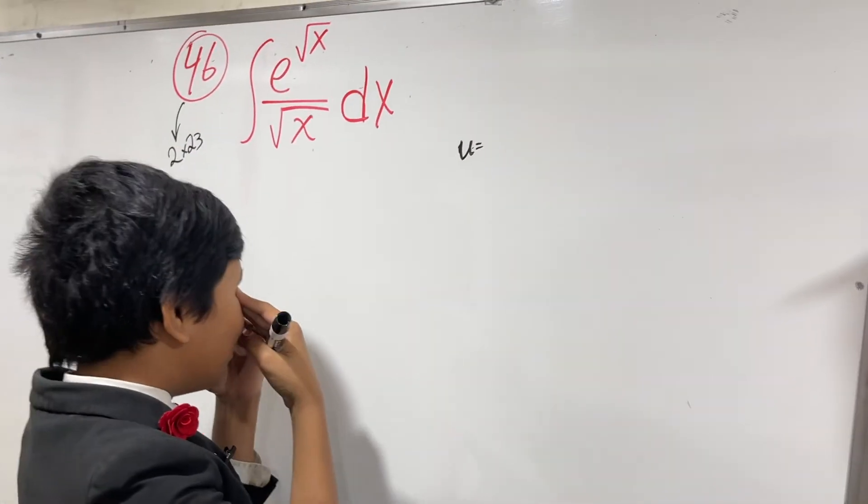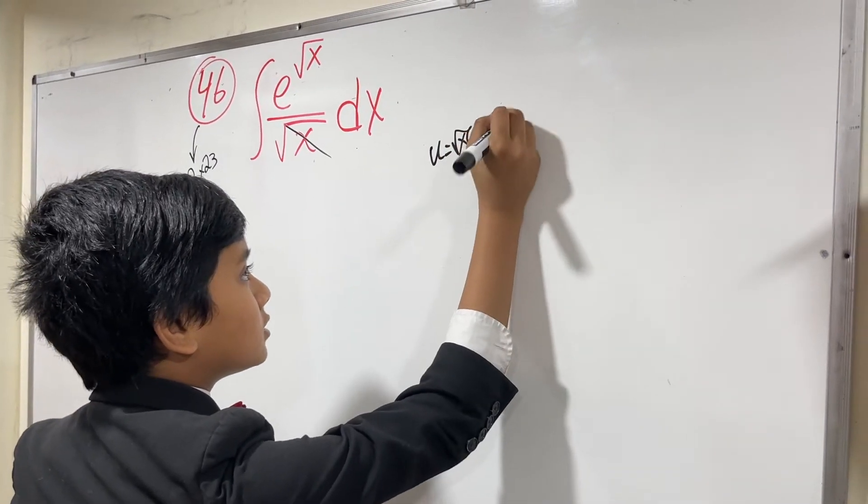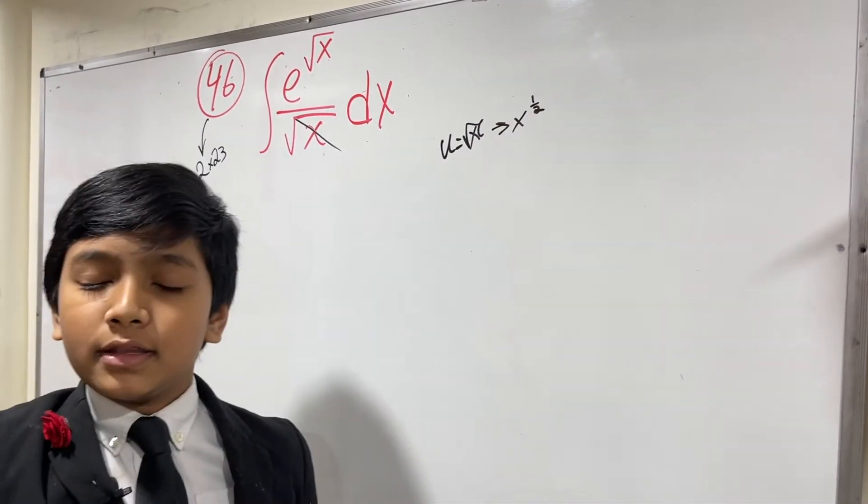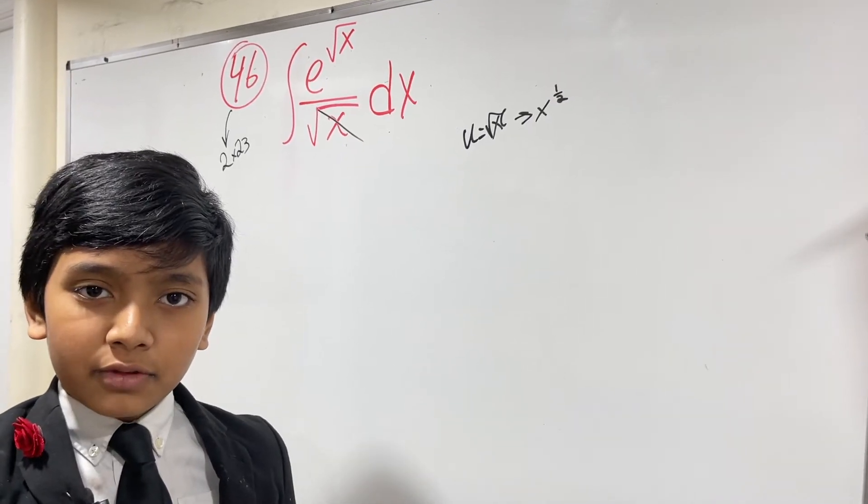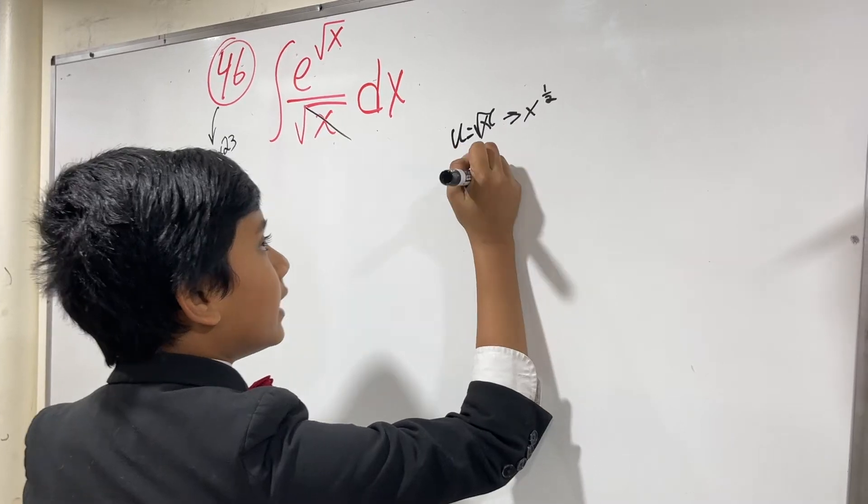We did the derivative of this before. The derivative is: du = (1/2)x^(-1/2) dx, or du = 1/(2√x) dx. So by cross-multiplication we get...